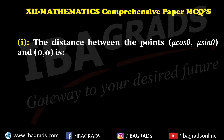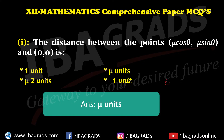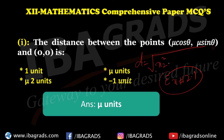जैसा कि हमारा सबसे पहला सवाल था — distance between points। आपको इसका distance निकालना है। Two-point formula का फोर्मूला क्या होता है? Distance का फोर्मूला होता है: √[(x₂ - x₁)² + (y₂ - y₁)²]। आप अगर observe करोगे और इसको solve करोगे, तो इसका आउटपुट आएगा new units में।